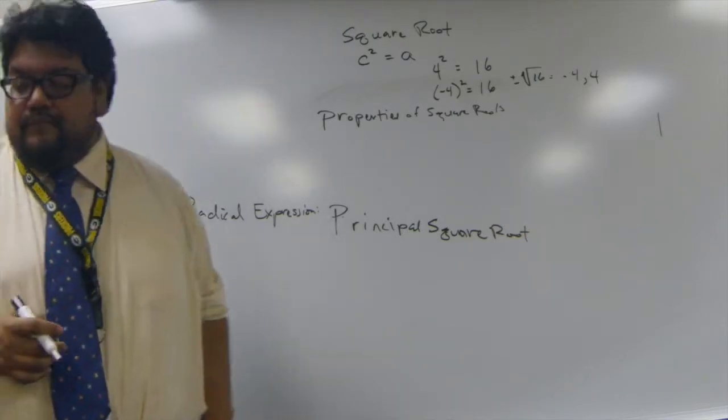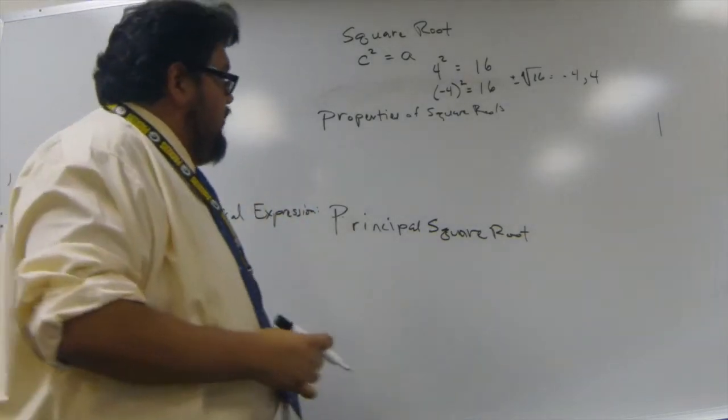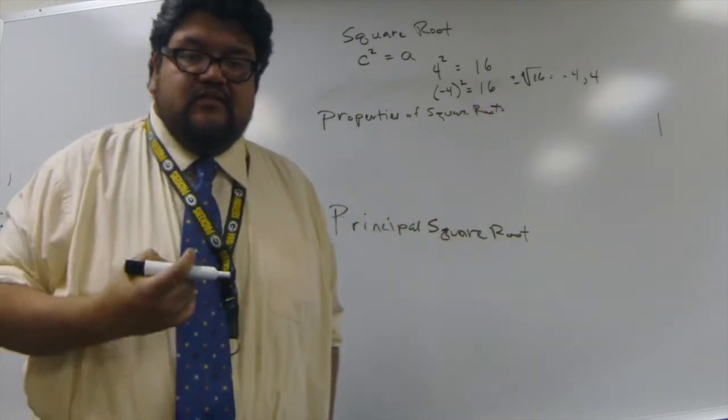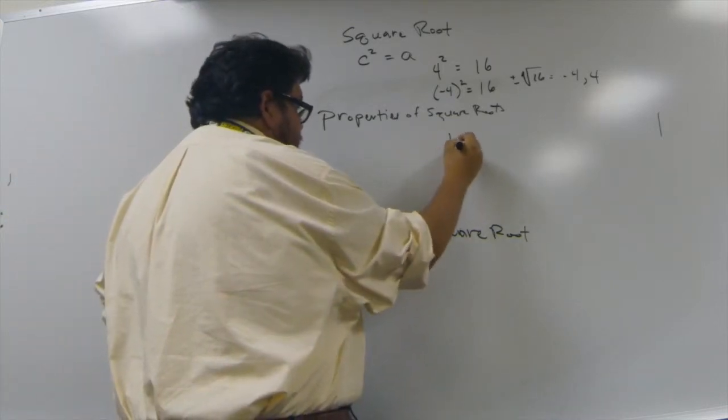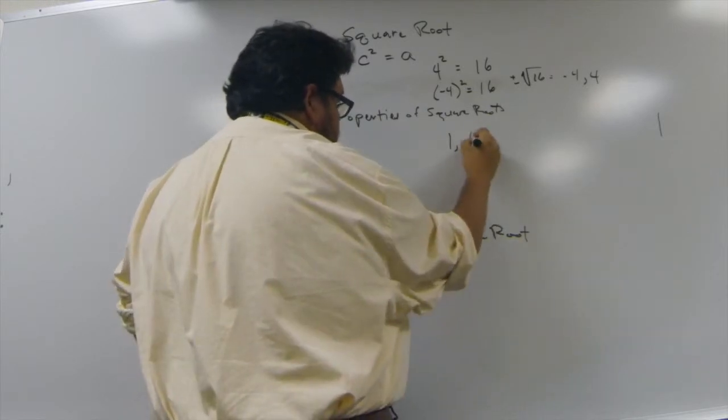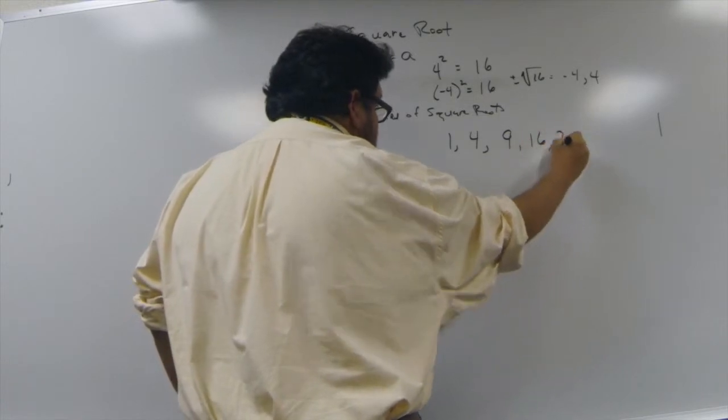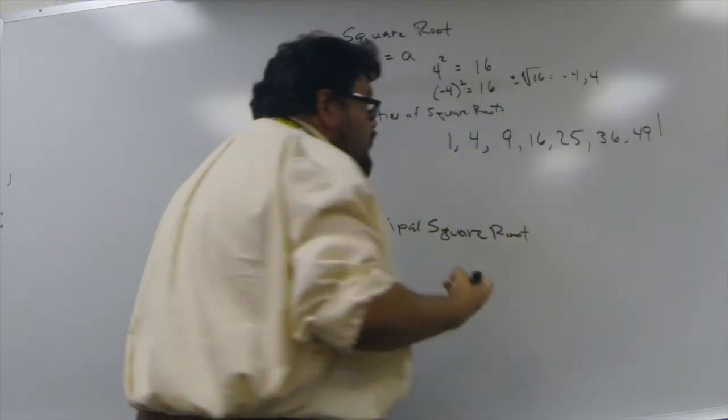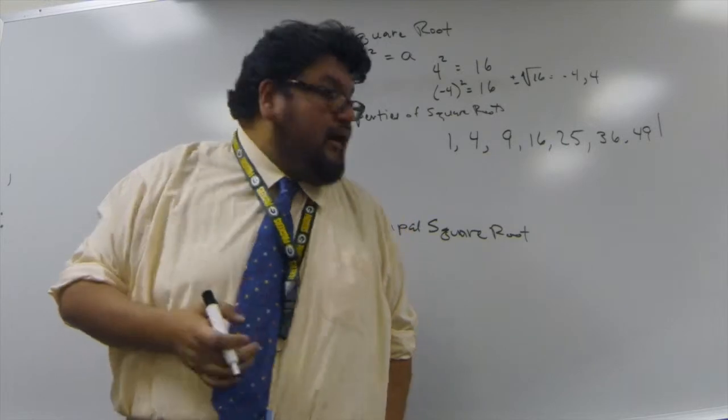Properties of square roots. Every positive number has a square root, meaning only positive numbers. The perfect square numbers are 1, 4, 9, 16, 25, 36, 49. Those are perfect square numbers, meaning that their square roots are positive.